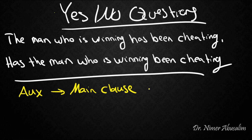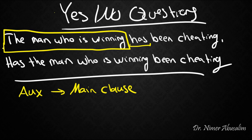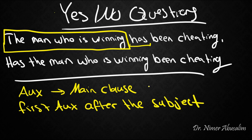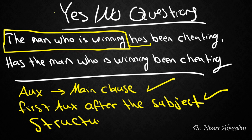The main clause auxiliary here is 'has.' A second way we can say this is to recognize that 'the man who is winning' is the subject, so the rule is: take the first auxiliary after the subject is finished. In both of these solutions, we had to resort to the idea that there is structure governing how sentences are formed.